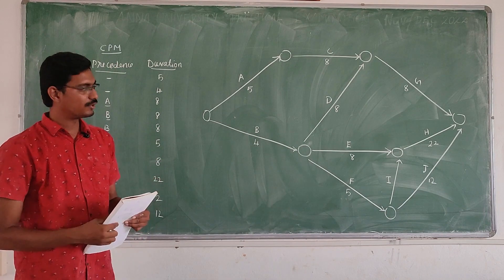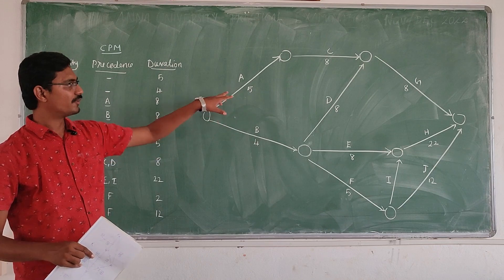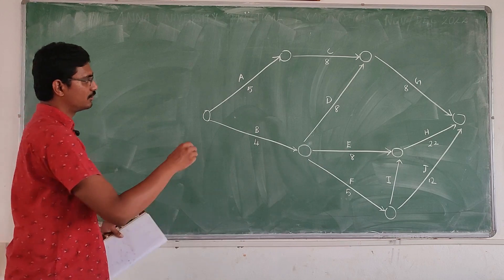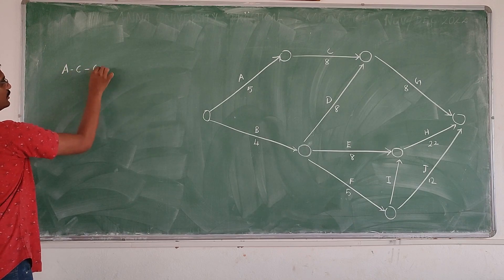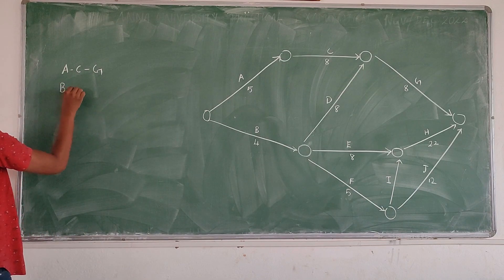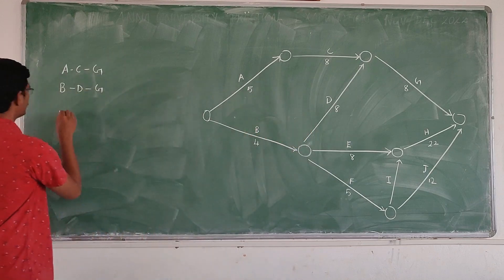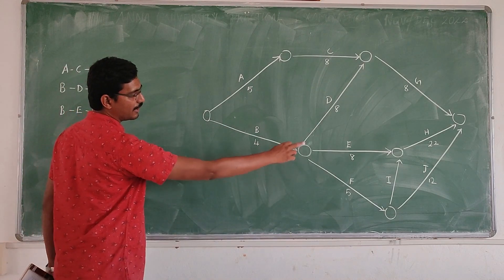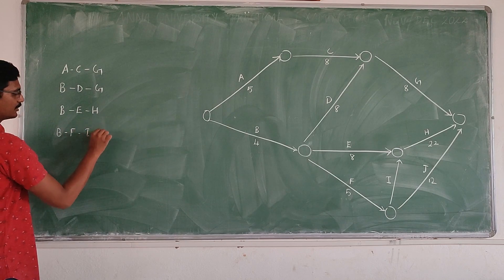This is the network diagram. From that we can find out the different paths and then find the critical path and critical duration. The paths are: A, C, G; then B, D, G; then B, E, H; then B, F, I, H.